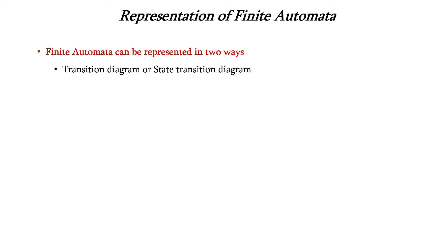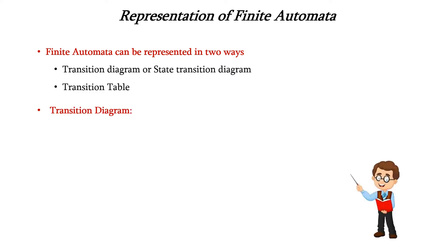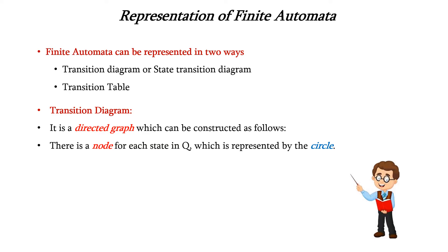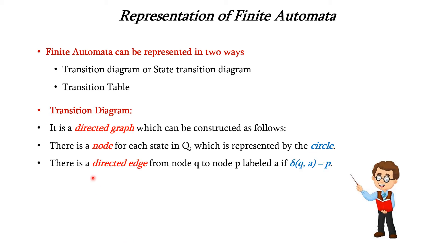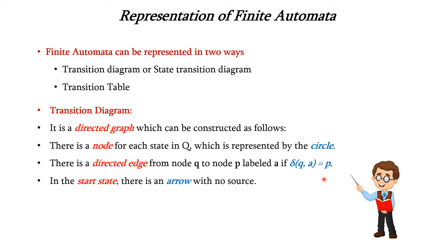Now we will see how to represent finite automata. It can be represented in two ways: one is a transition diagram, also called a state transition diagram, and another is a transition table. The transition diagram is a directed graph. There will be a node for each state in Q, represented by a circle, and a directed edge from node Q to node P labeled with input A, if there exists a transition function Delta(Q, A) = P. Here Q is the current state, A is the input, and P is the next state.